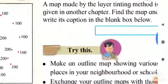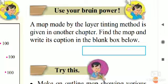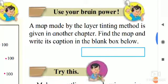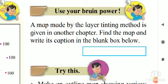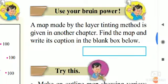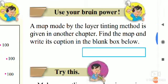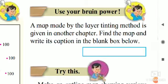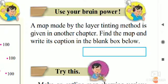Use your brain power — जरा सोचो. A map made by the layer tinting method is given in another chapter. देखो, रंगा पद्धती का उपयोग करके एक अन्य प्रकरण में भी map दिया गया था. Find that map and write its caption in the blank box below. उस map को खोजना है और उसका शीर्षक इस box में लिखना है.